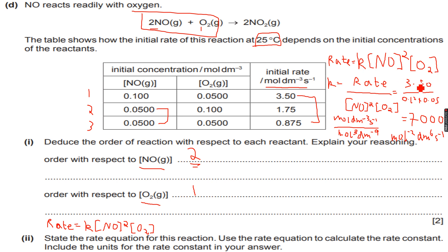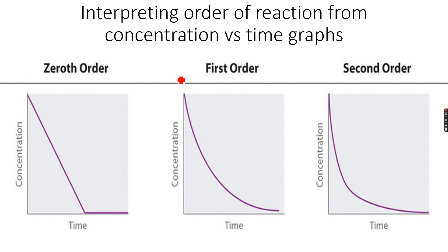So depending on the rate equation the units of k will differ but this is how we calculate the value and this is how we calculate the units. So we have calculated the value of k and we have also calculated the units of k. So now we can move forward. So interpreting the order of reaction from concentration versus time graphs.